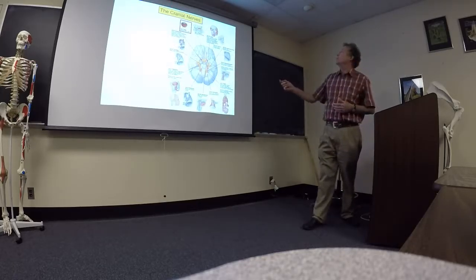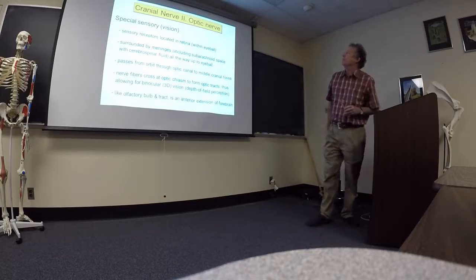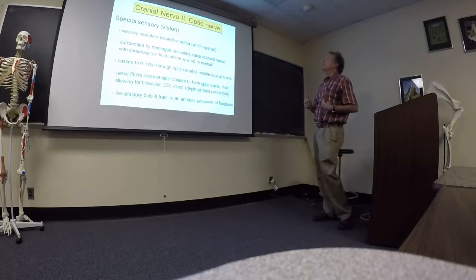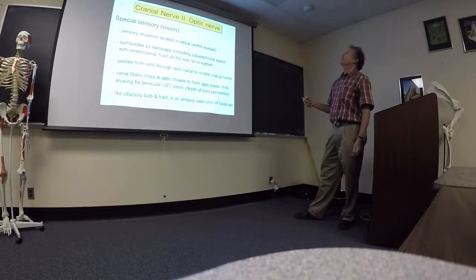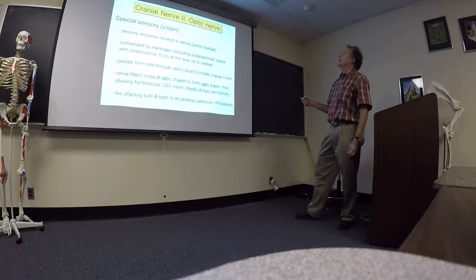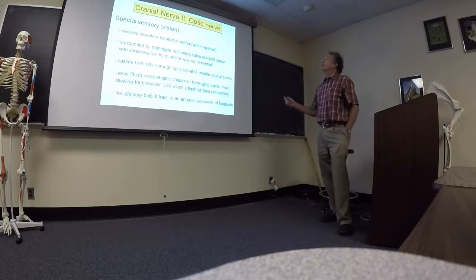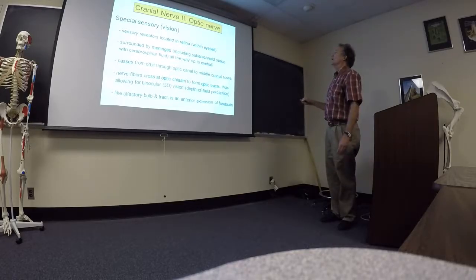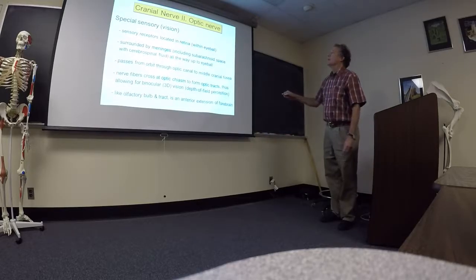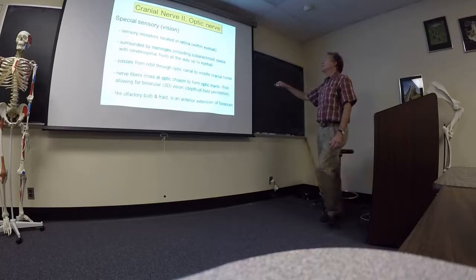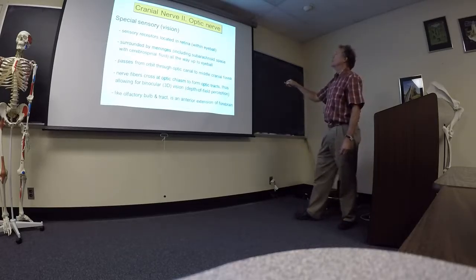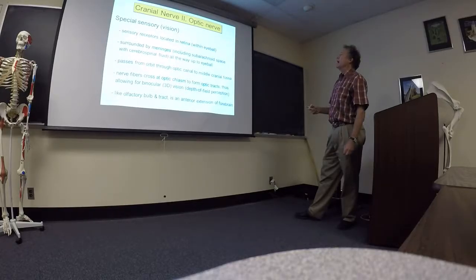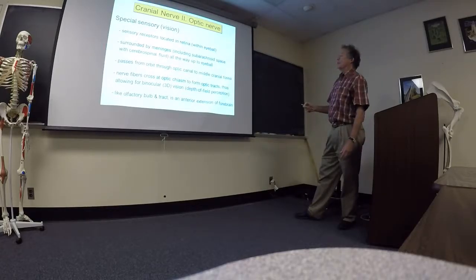Okay, moving on. Number two, the optic nerve. Okay, again it's one of the simpler ones in the sense that it only does one thing. It's concerned with vision. The sensory receptors involved with vision are located in the retina which is a layer within the eyeball. The optic nerve itself is surrounded by meninges, okay, all the way up to the eyeball. So when you see the optic nerve traveling from the cranial cavity up to the eyeball it's actually surrounded by cerebrospinal fluid and meninges just like the brain and the spinal cord. The optic nerve passes from the orbit through the optic canal.